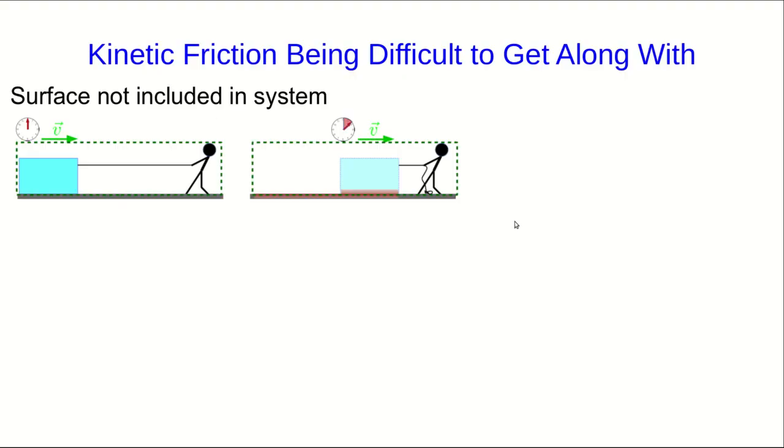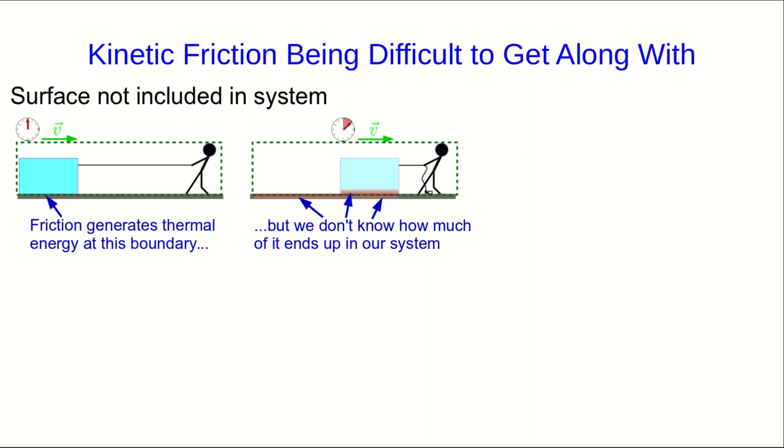We've now seen quite a few times that friction is very complicated, and so now let's see another way that friction will complicate our lives. When we're doing an energy analysis, we often have to be very careful with friction. Let's think about a person pulling a box across a floor using a rope, and the floor is not being included in the system. Friction is going to generate thermal energy at this boundary between the floor and the box. The problem here is that we don't know how much of that thermal energy ends up in our system.